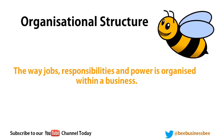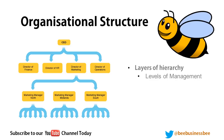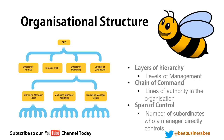An organisational structure is the way jobs, responsibilities and power are organised within a business. A typical structure has layers of hierarchy showing levels of management, a chain of command showing lines of authority, and a span of control showing the number of subordinates that people control in the business.